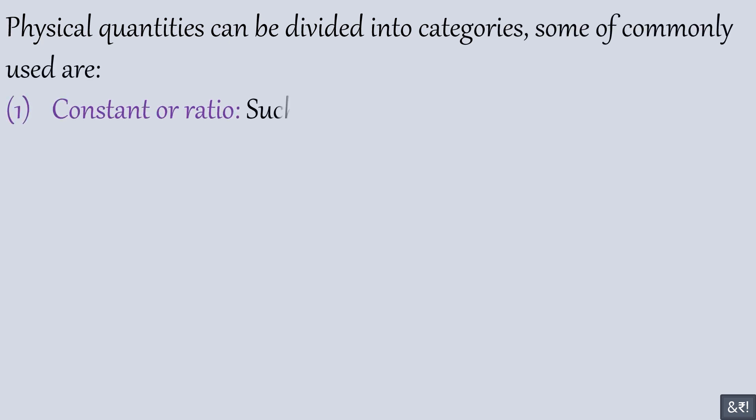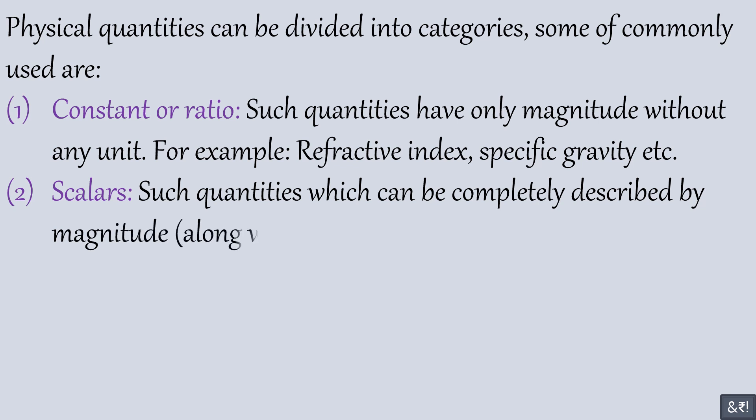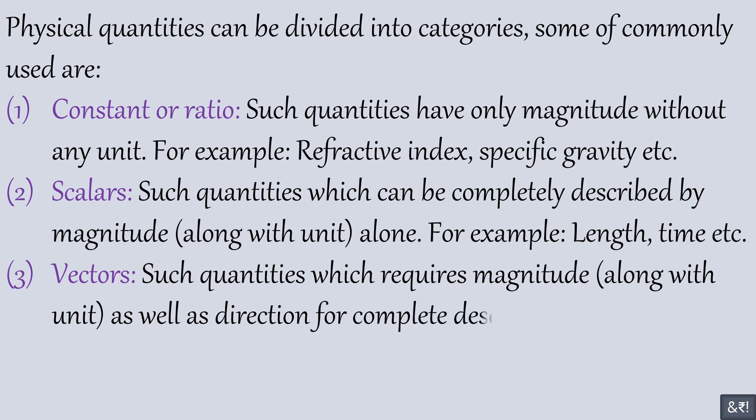Physical quantities can be divided into categories. Some of commonly used are: first, constant or ratio - such quantities have only magnitude without any unit, for example refractive index, specific gravity, etc. Second, scalars - such quantities which can be completely described by magnitude along with unit alone, for example length, time, etc. Third, vectors - such quantities which requires magnitude along with unit, as well as direction for complete description, for example force, momentum, etc.